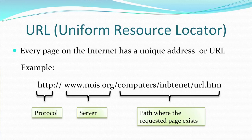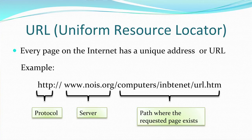The third part of the URL is the path on the server where the requested page is saved. For example, the page 'url.htm' may be stored in a folder 'computers', subfolder 'inbtenet', with the file name 'url.htm'. So the complete URL consists of the protocol, the server, and the complete path along with the file name. Every web page you request will have these three components in its URL.